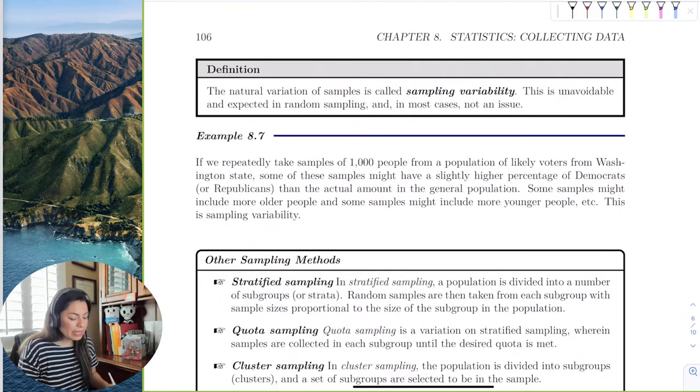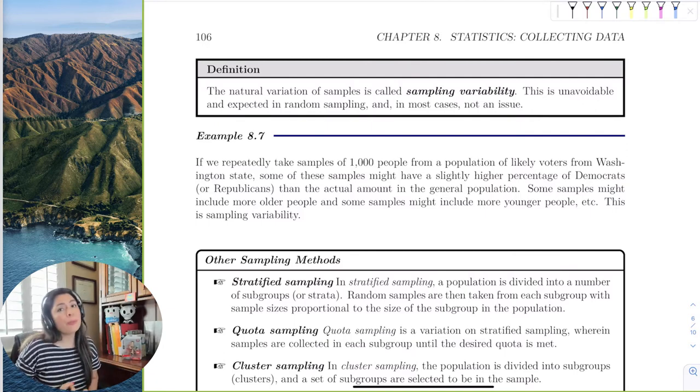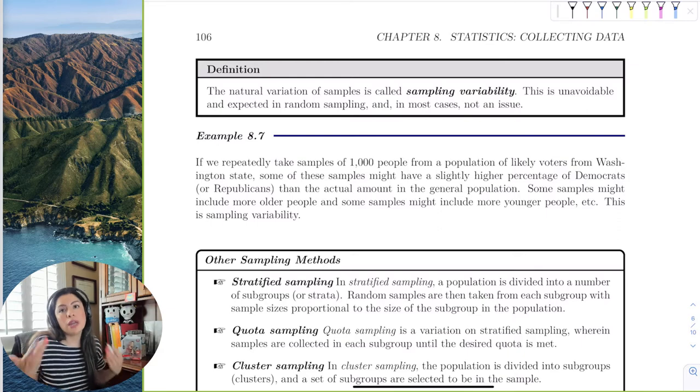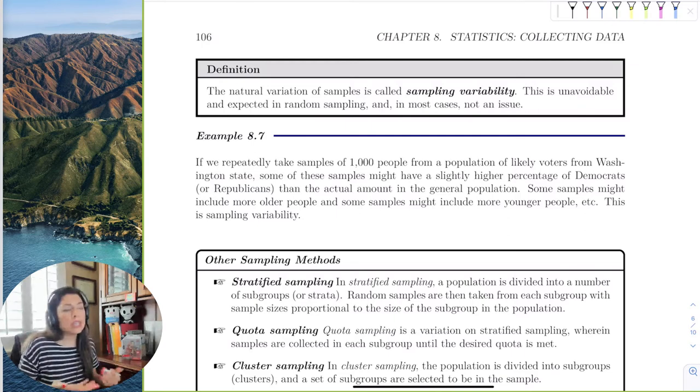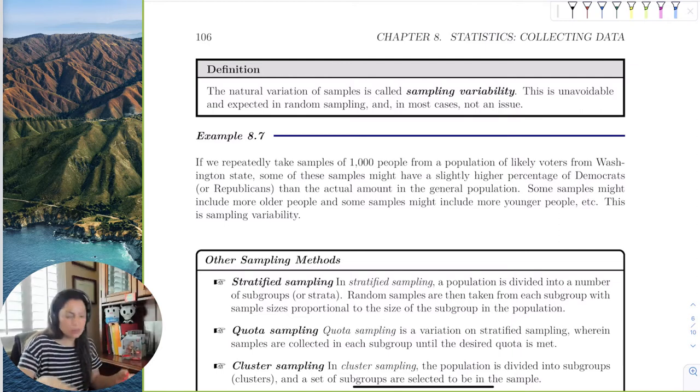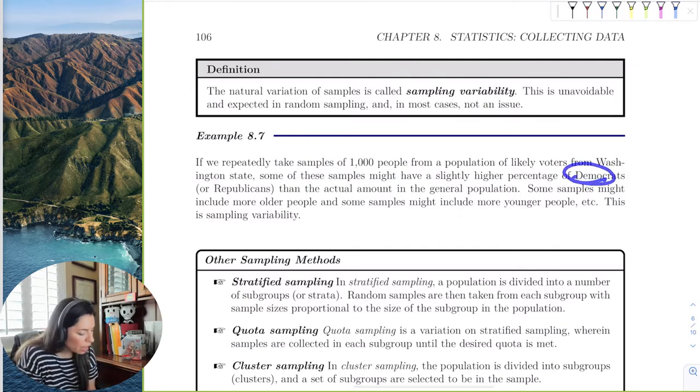Okay, but to avoid sample bias, we need random sampling, but we can't help it. If we use the best software, we're still likely to maybe get a sample bias where we have to kind of resample the population. And this is, voting is always a great one because if, like I said, if we repeatedly take, let's say we put the hats and we randomly take a thousand samples over and over again, some of these might have a higher percentage of Democrats or Republicans than the actual amount in the general population.